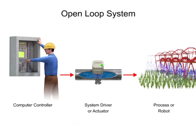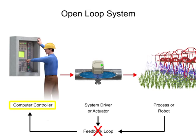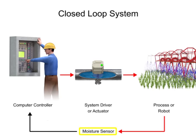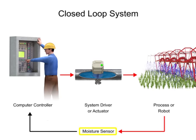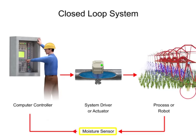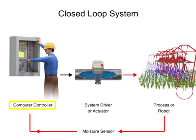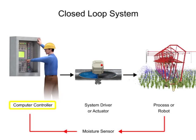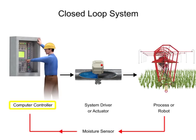In our previous example of a sprinkler, the system was open-loop because the controller received no feedback. But if a moisture sensor is added, it becomes a closed-loop system. The sensor measures the moisture density of the soil and sends that information back to the computer controller, which can then make adjustments to the quantity of water coming from the sprinkler.